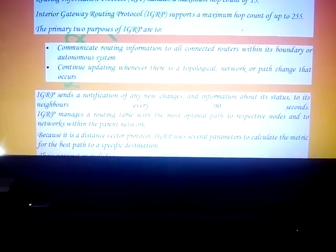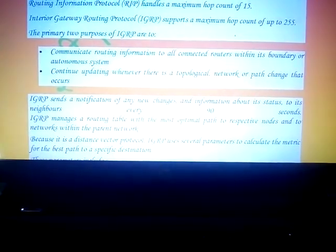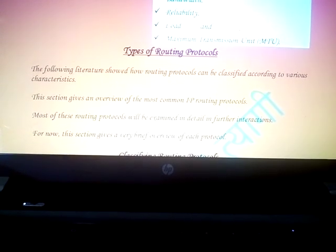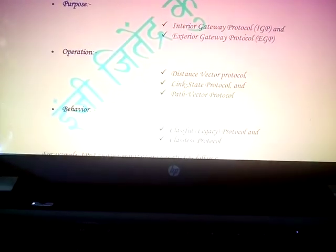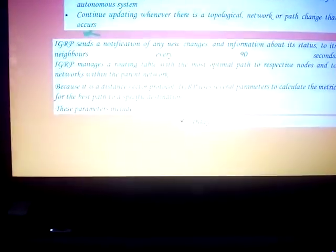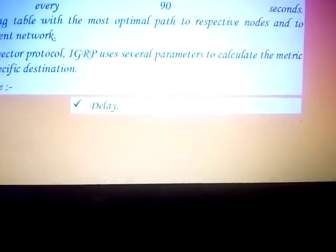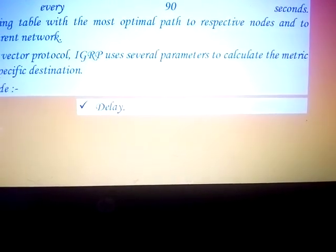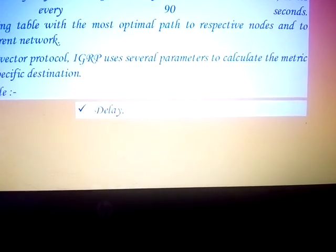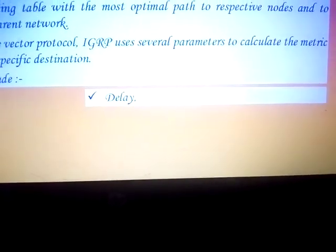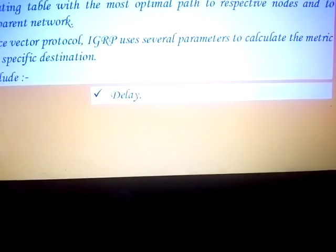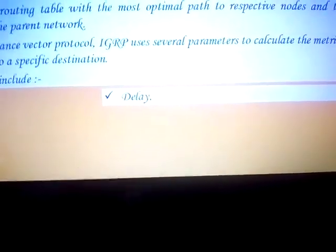IGRP uses several parameters to calculate the metric for the best path to a specific destination. These parameters include delay, bandwidth, reliability, load, and Maximum Transmission Unit. Delay is the parameter that focuses on how many hops a packet takes to reach its destination. For example, if it was calculated to arrive in 15 hops but takes 20 hops, there is a delay of 5 hops.